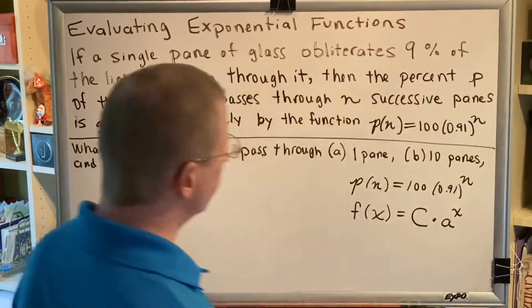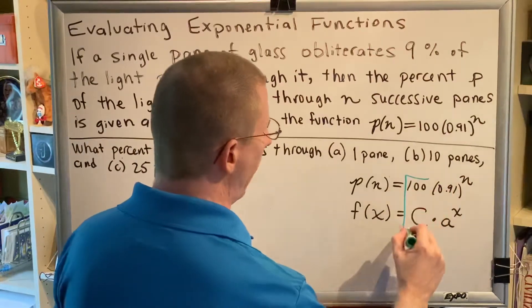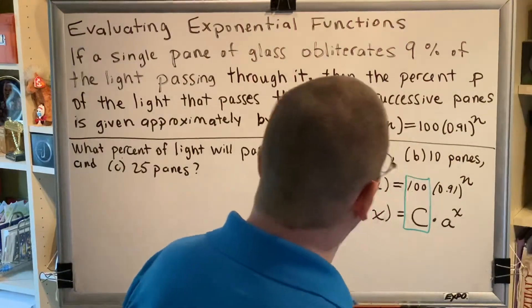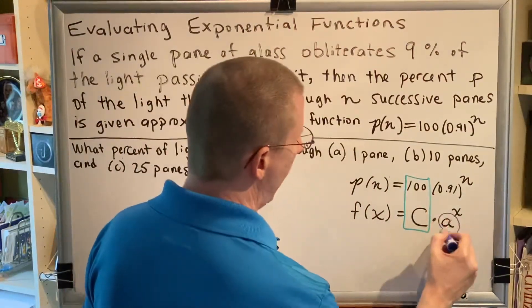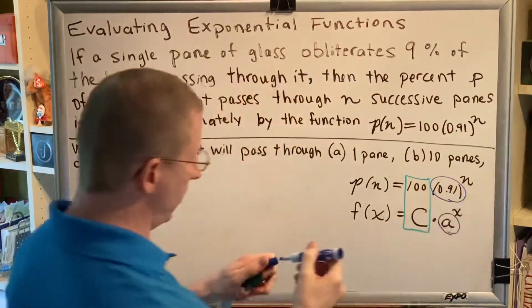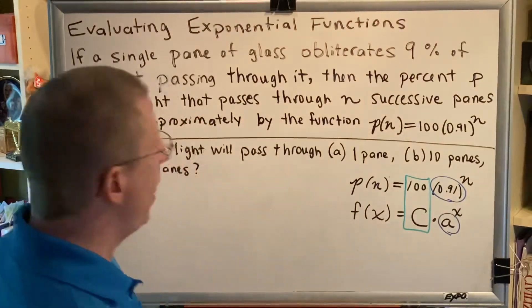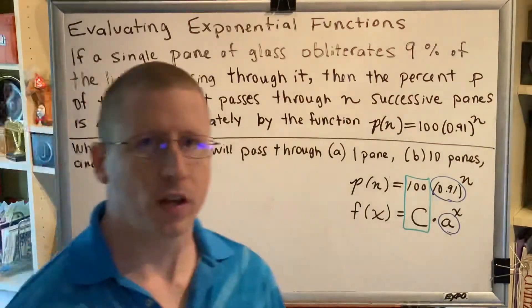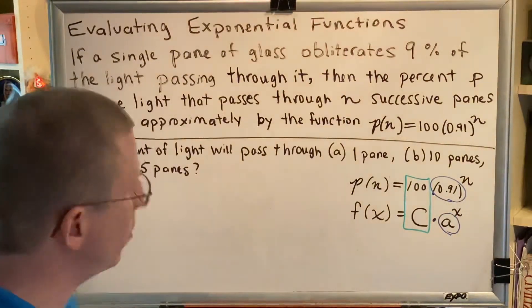Specifically, the initial value, capital C, is 100. The growth factor, a, is 0.91. And the variable in our problem is n instead of x. And that's fine. You can use any variable you want as long as you define it.